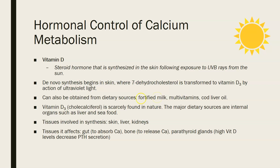Vitamin D is a steroid hormone synthesized in the skin following exposure to UVB rays — it's called a vitamin, but that's really a misnomer because it is a hormone. It is important not only to calcium metabolism but also to a healthy immune system and good mood. Insufficient sunshine exposure, especially in winter, can lead to depression and decreased immunity due to vitamin D deficiency.